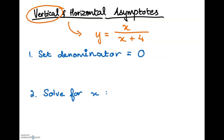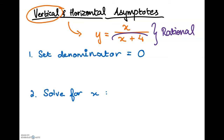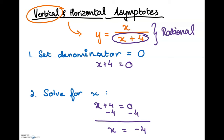This is a quick introduction on how to solve for the vertical asymptote. Let's say you have a rational equation — it's rational because it's dividing two factors. We have a numerator of x and a denominator of x plus 4. When solving for the vertical asymptote, the first step is to set the denominator equal to 0. So x plus 4 equals 0. The next step is to solve for x: subtract 4 on both sides, and that results in x equals negative 4, which is the equation of your vertical asymptote.